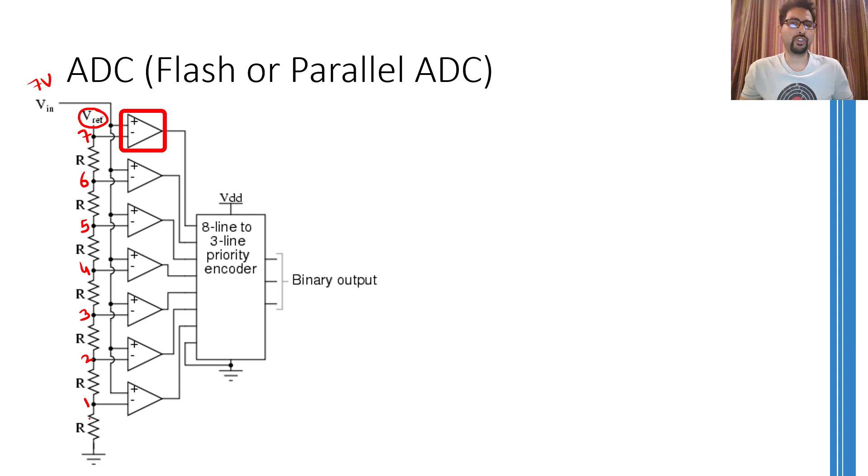Whereas this comparator is going to give you a negative saturation value. Normally, in this case, the negative saturation value is 0 and the positive saturation value is a positive voltage. For example, it might be plus 5 volts or plus 12 volts depending on the application. So you are going to see a 0 in the first line and 1 in all other lines.